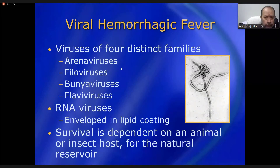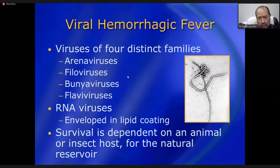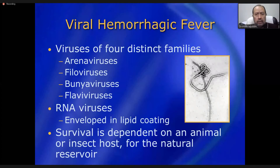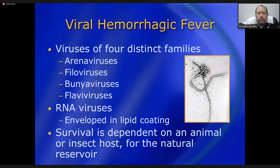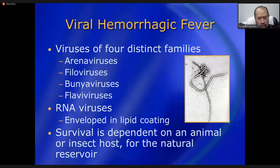Four families of viruses are responsible for most viral hemorrhagic fevers: Arena, Filo, Bunya, and Flavi. To remember them easily, use the acronym AFBF — A for Arena, F for Filo, B for Bunya, F for Flavi. These four families contain most of the viruses causing viral hemorrhagic fevers.